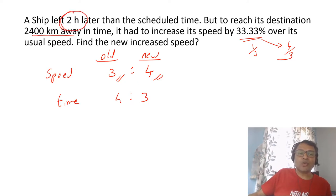But we know the time difference is 2 hours. 4 and 3, the difference is 1. To make it 2, we will have to make it 8 and 6. So this will be 8 hours and this will be 6 hours.